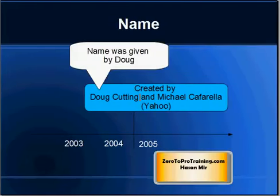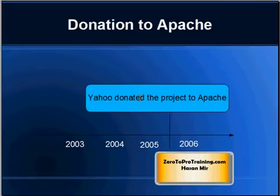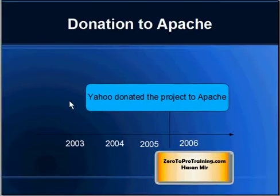The name Hadoop is indeed unusual — it was the name of a toy elephant that Doug's son used to play with. It was Doug's son who invented that name, and Doug borrowed it for his project. In 2006, Yahoo donated the Hadoop project to Apache — this is how Apache came into the picture. So the idea was invented by Google, the underlying technology was created by Google, and based on their papers Yahoo built the product which was then handed over to Apache.